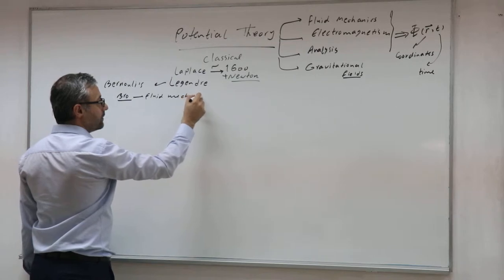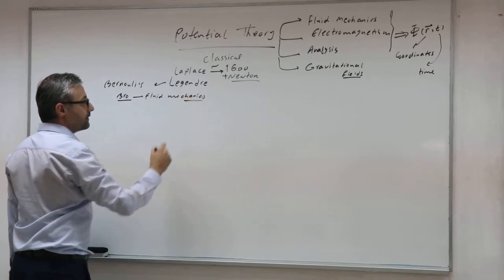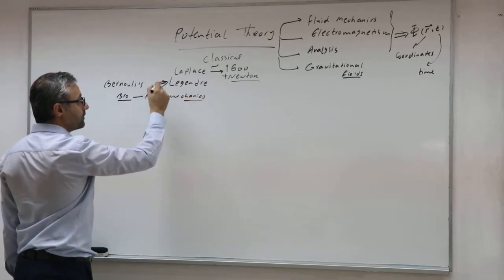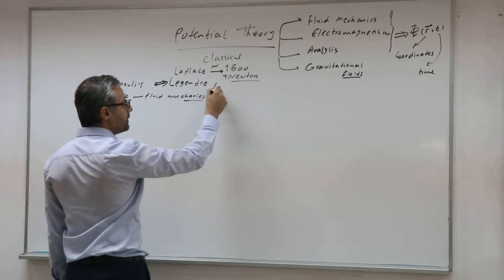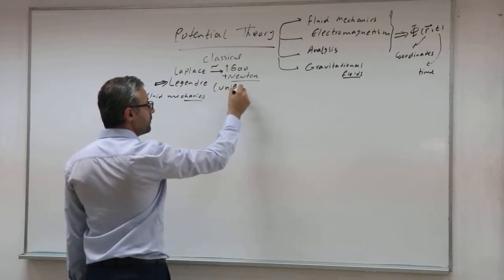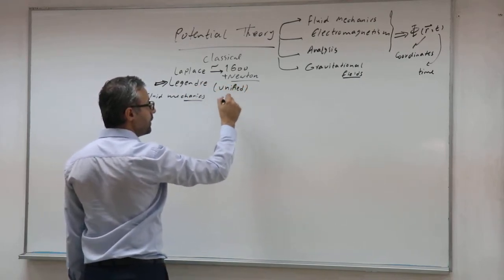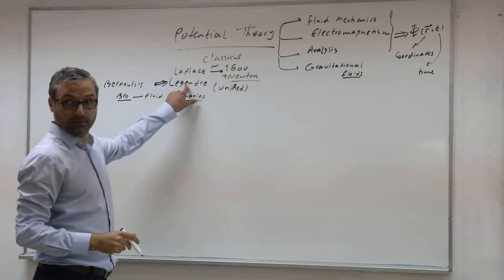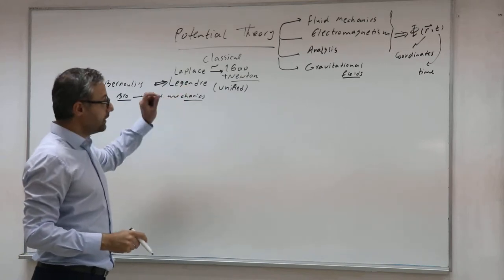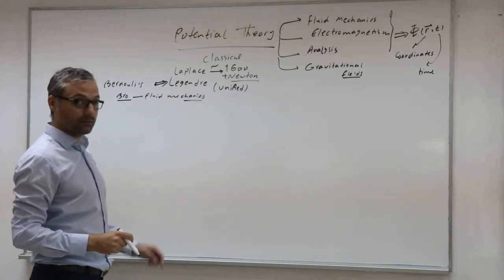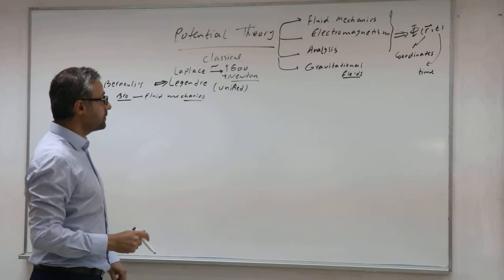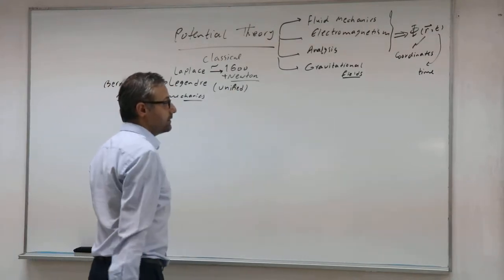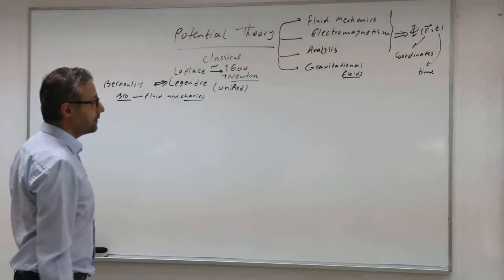You need to know the history because it is very useful. After that, Lagrange was the person who made it unified. We have a unified theory for potential theory because of Lagrange. He did a lot of interesting work about the potential theory, and it continues till today.